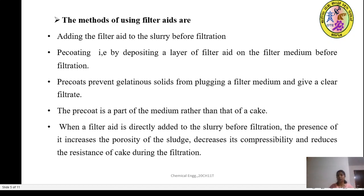Filter aids can be used in two ways: by adding directly to the slurry before the filtration, or by pre-coating — that is, by depositing a layer of filter aid on the filter medium before the filtration begins. Pre-coating prevents the gelatinous sludge from plugging the filter medium and gives a clear filtrate. A pre-coat is considered a part of the filter medium rather than part of the cake.